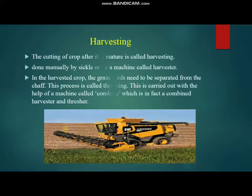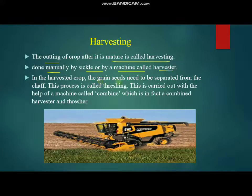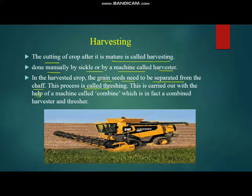Harvesting is the cutting of the crop after it is mature, done manually by sickle or by a machine called a harvester. In the harvested crop, grain seeds need to be separated from the chaff — this process is called threshing. Threshing is carried out with the help of a machine called a combine, which is in fact a combined harvester and thresher.